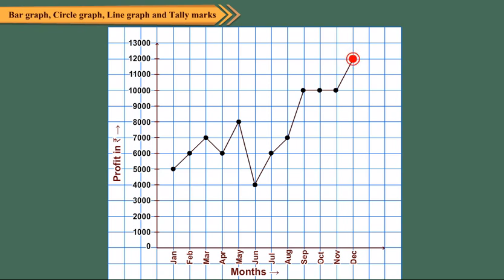We see that in the month of December, the profit is highest, which is equal to 12,000. Also, the profit in the month of June is lowest, which is 4,000. The profits on three consecutive months, September, October and November are same, i.e. 10,000 for each month.